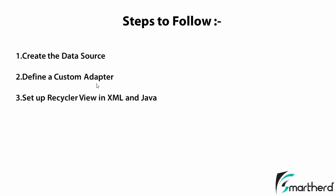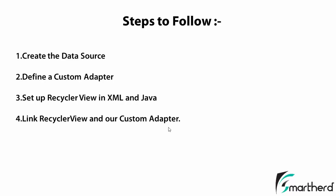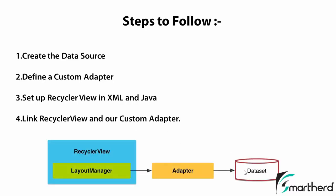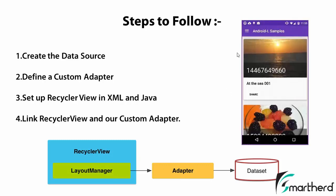The next step is to set up the RecyclerView inside the XML file and Java file. Then we are going to link the RecyclerView and our custom adapter. The scenario is: we prepare the data set, give it to the adapter, the adapter takes care of the data set, and we link the adapter with the RecyclerView. The appearance of the RecyclerView is determined by the Layout Manager, which binds the RecyclerView and the adapter, giving us a RecyclerView with awesome elements as output.